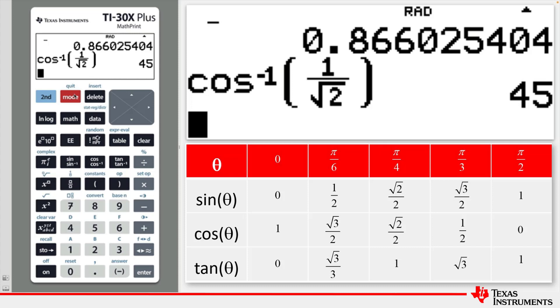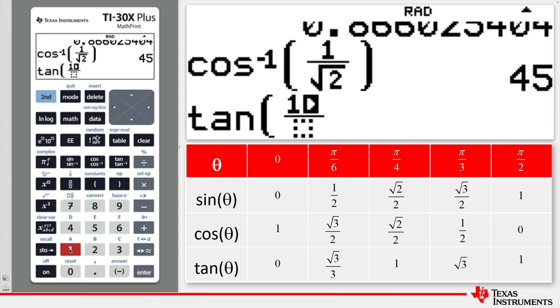And now, as an example, let's find the tan of 11π on 6. Tan, fraction 11, the pi symbol, over 6.